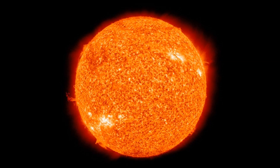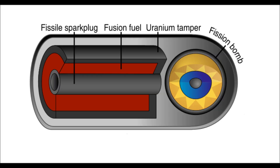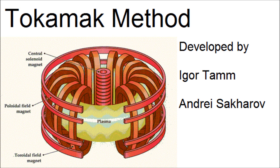Nuclear fusion is the same process that powers stars such as our sun. However, in stars, some of the mass is converted to photons, which is what makes the sun bright. Nuclear fusion also powers hydrogen bombs, but not fully, since a nuclear fission reaction is used to begin the process. Nuclear fusion, unlike nuclear fission, is very easy to control, and therefore easier to harness for electrical energy.